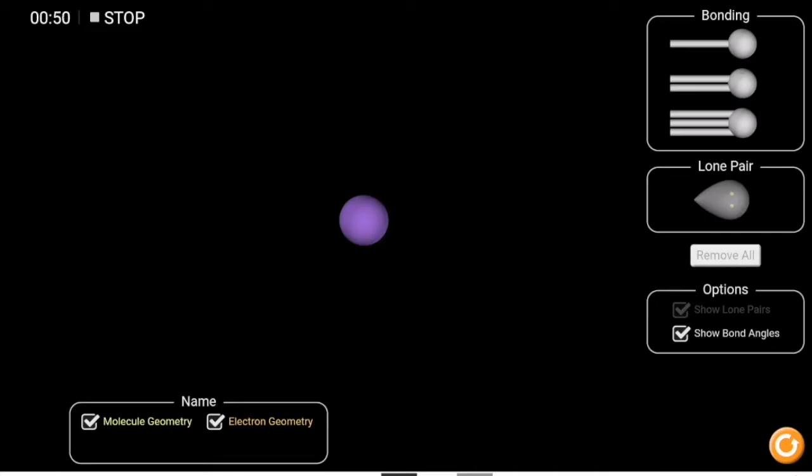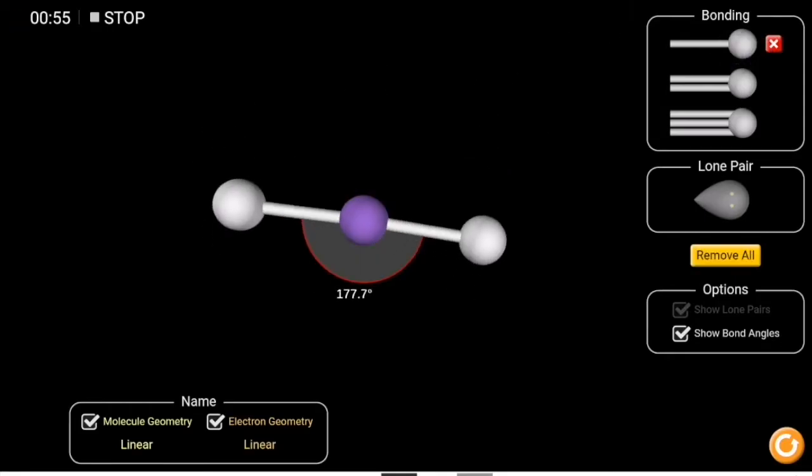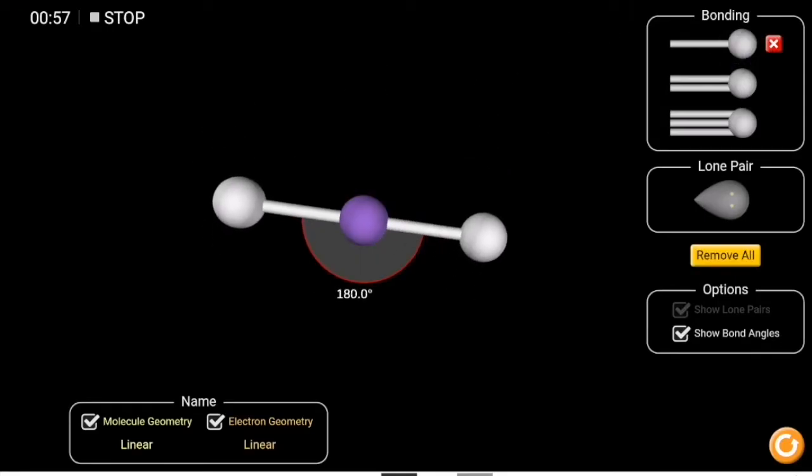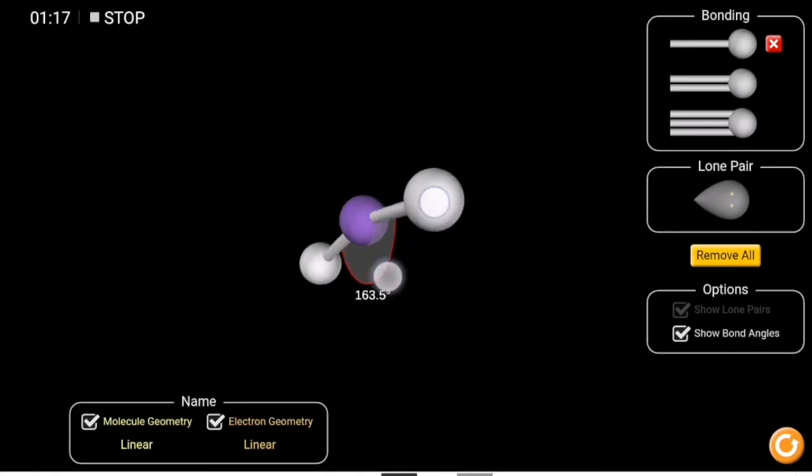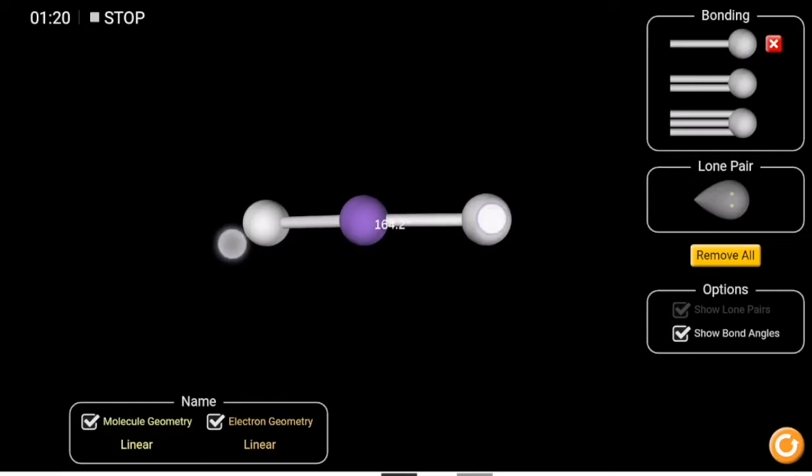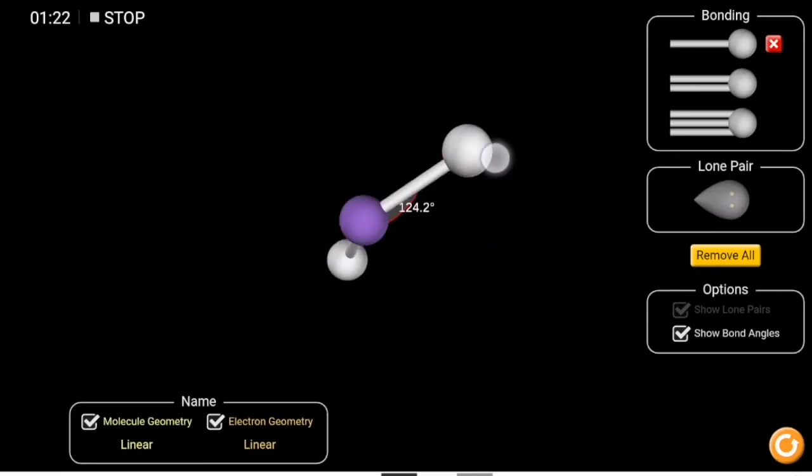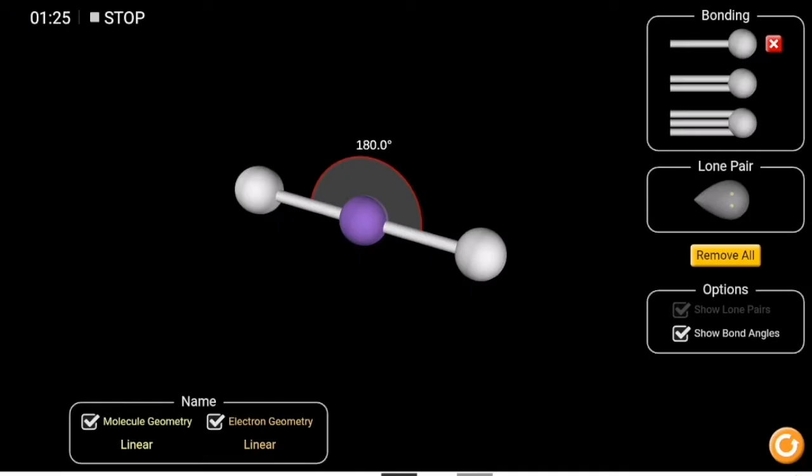So first we are going to begin with the shape of AX2. As an electron geometry, as you can read over here, it's linear. And since there's no lone pair added to this molecule, the molecular geometry will be the same as the electron geometry and linear. As you can see here, the two atoms, no matter how I try to hold them and push them next to each other, they will keep on repelling each other to obtain a 180 degree angle.